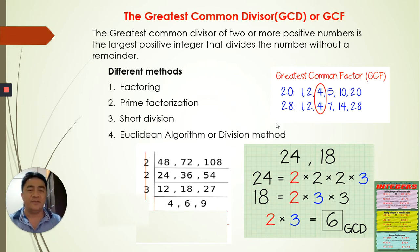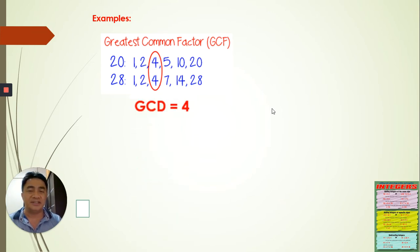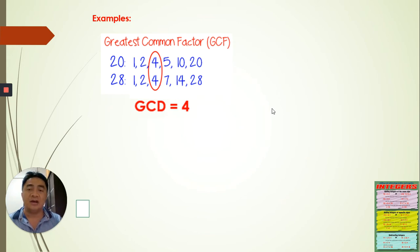We first cover the factoring method, the prime factorization, and the short division method. So we have examples here. For the factoring method, the GCF or GCD is four. For the GCF, we just pick the greatest common among the two integers. We have the factors, the common factor, and the greatest common factor, which you can use as the GCD or the GCF.